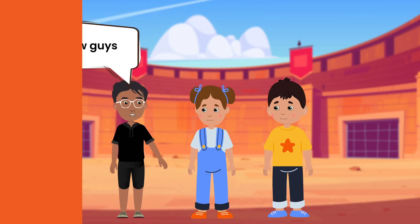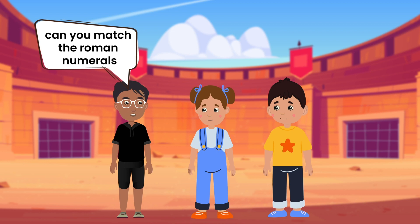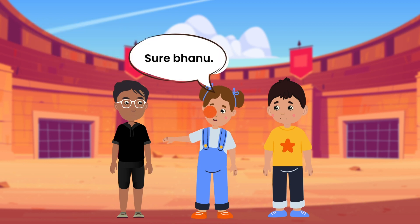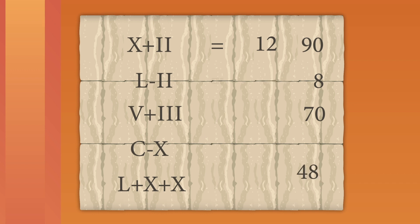Now, guys, can you match the Roman numerals with their values to solve the puzzle? Sure, Banu. The first one is 10 plus 2, which means 12. The second one is 50 minus 2, which is 48. And the third one is 5 plus 3, which is 8.